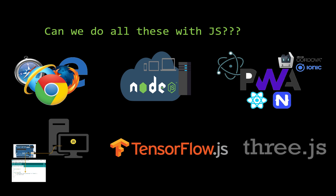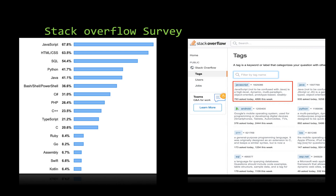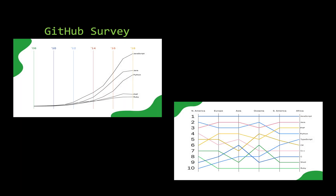JavaScript is still a platform for the future. On Stack Overflow surveys, JavaScript is number 1. On GitHub repository counts, it is also number 1. Yearly data from 2010, 2012, 2014, 2016, and 2018 shows the JavaScript boom growing considerably.